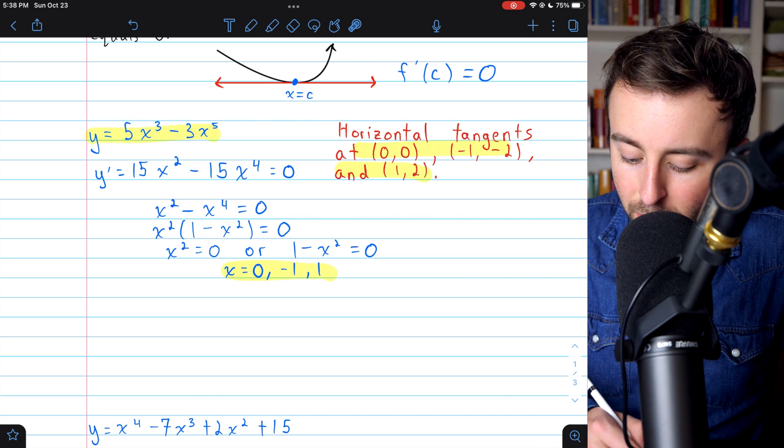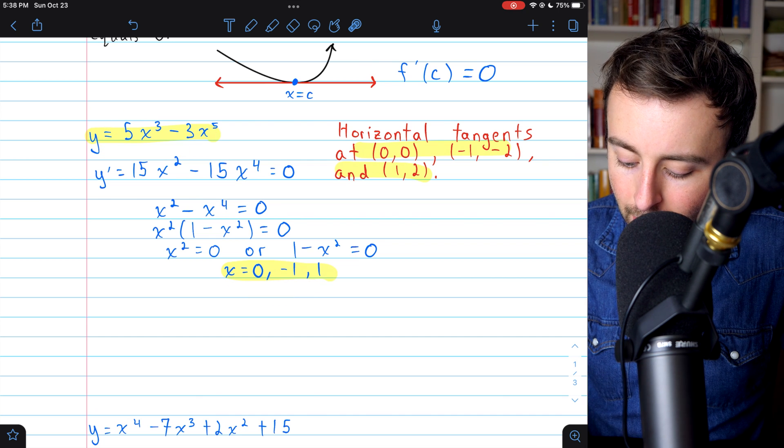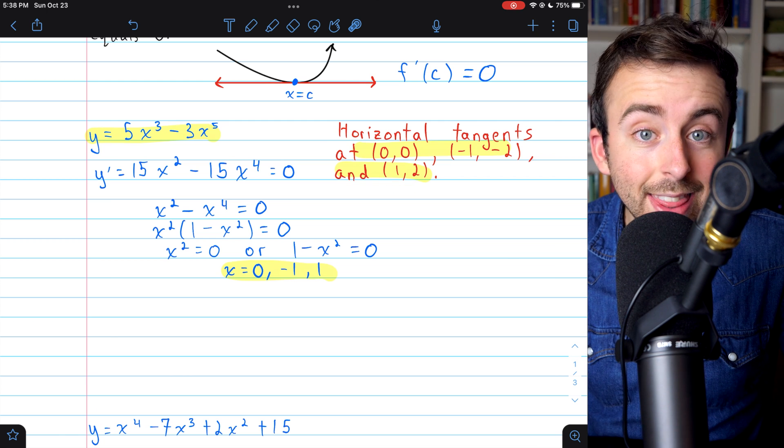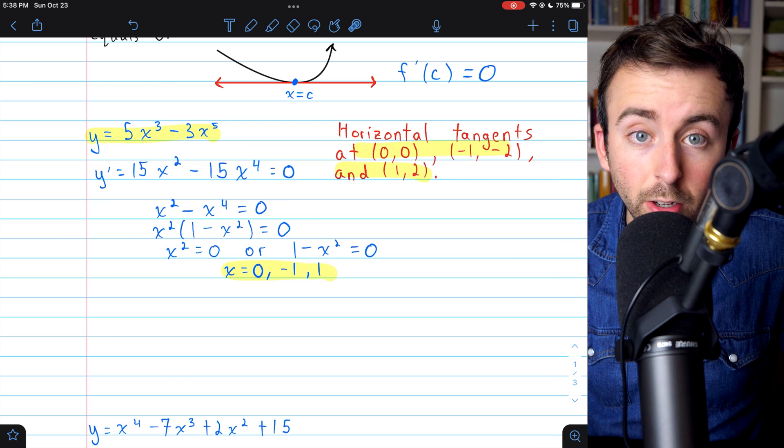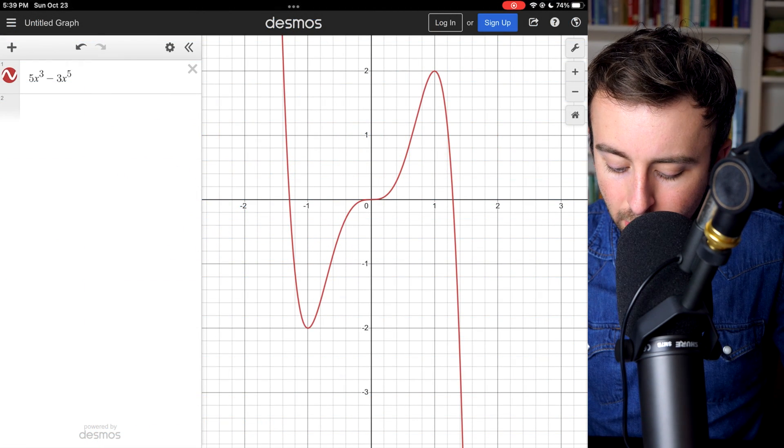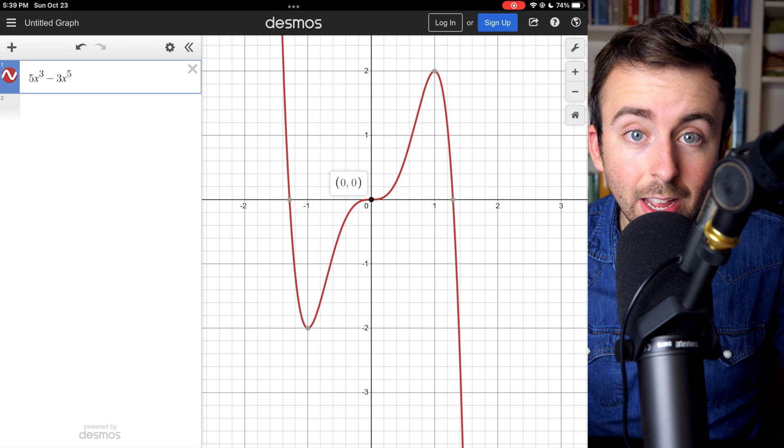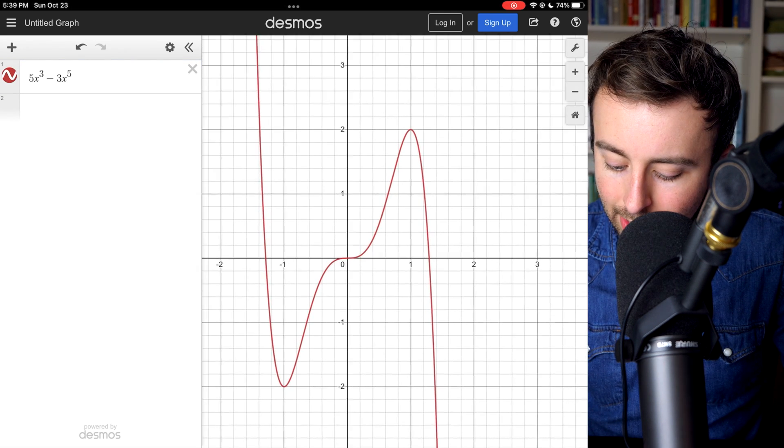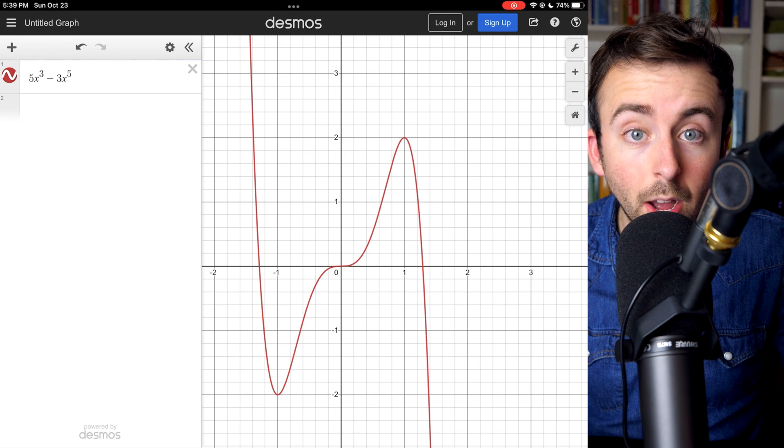Plugging in these x coordinates gives us the points (0,0), (-1,-2), and (1,2). That's where the horizontal tangents occur on this curve. And here's a graph of the function just for kicks. You can see how we'd have a horizontal tangent at the origin. Down here, x equals negative 1. And up here, x equals positive 1.